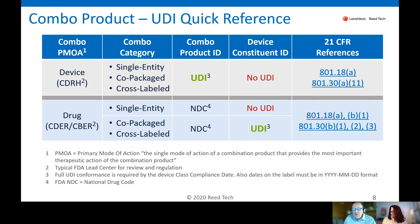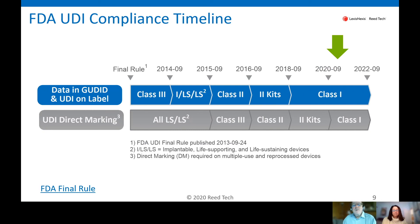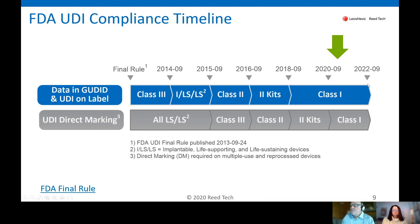That is a very critical chart. Once you understand the PMOA and the product category, you'll be able to quickly identify whether UDI is required for the device constituent. As to timing — when UDI compliance must be in place — Class 3 and Class 2 devices are past due, going back to 2014 and 2016 timeframes. Class 1: if your device constituent in that combination product is Class 1, you have until September 2022 to achieve UDI compliance. If your combination product has multiple devices, you always follow the highest risk class to determine your timeline.